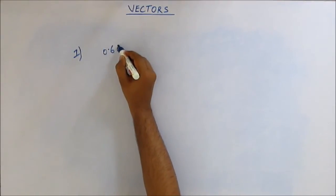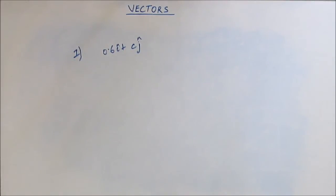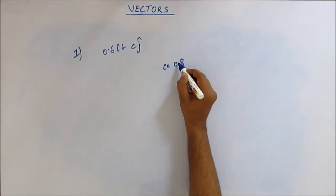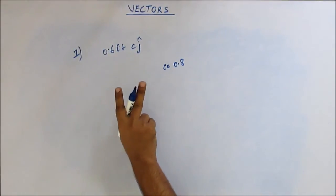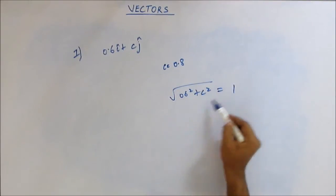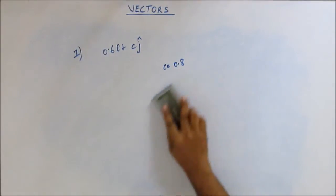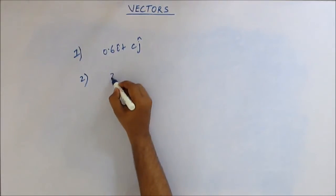First question: 0.6i-cap plus cj-cap is a vector, and this vector is a unit vector — find the value of c. Work this out orally. The value of c would be 0.8. It's simple: a unit vector has magnitude one, so root over (0.6 squared plus c squared) must equal one, which gives c = 0.8. Congratulations to everyone who got the answer.